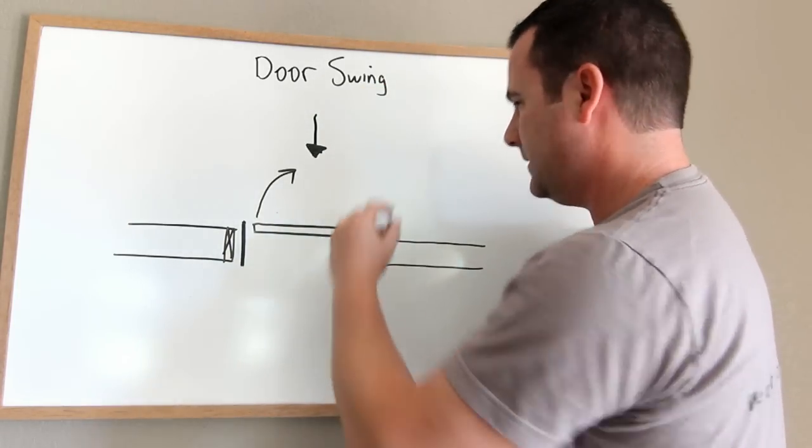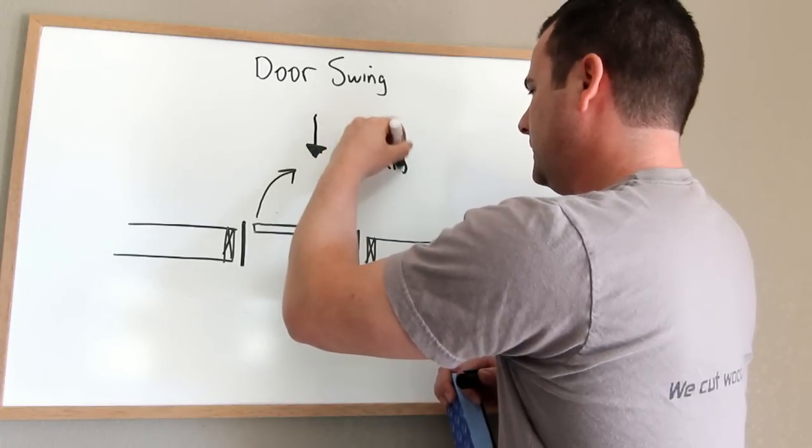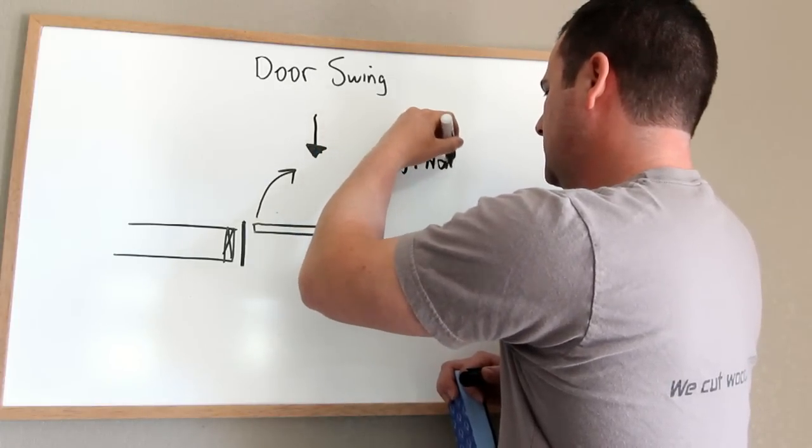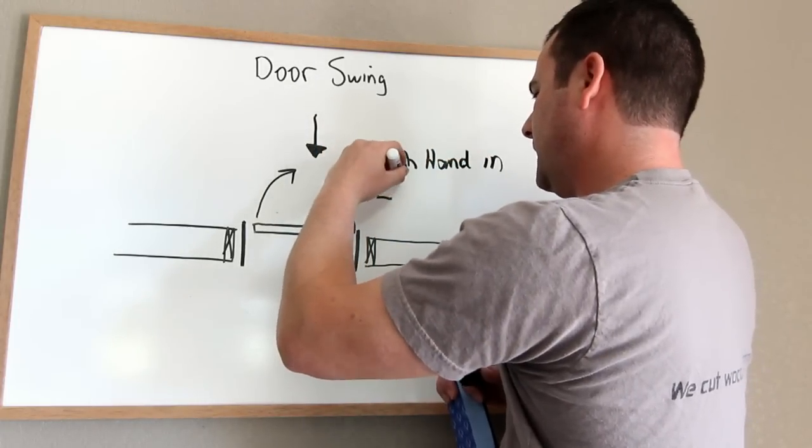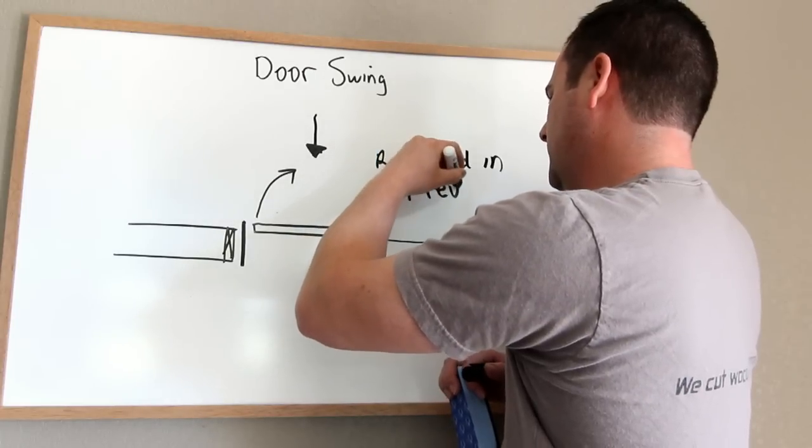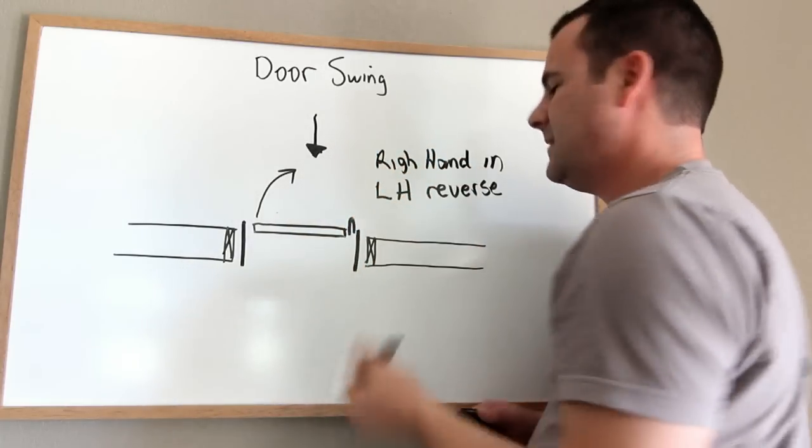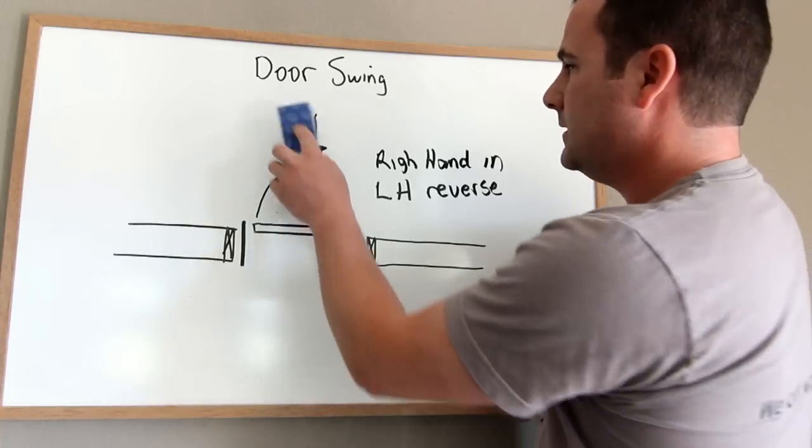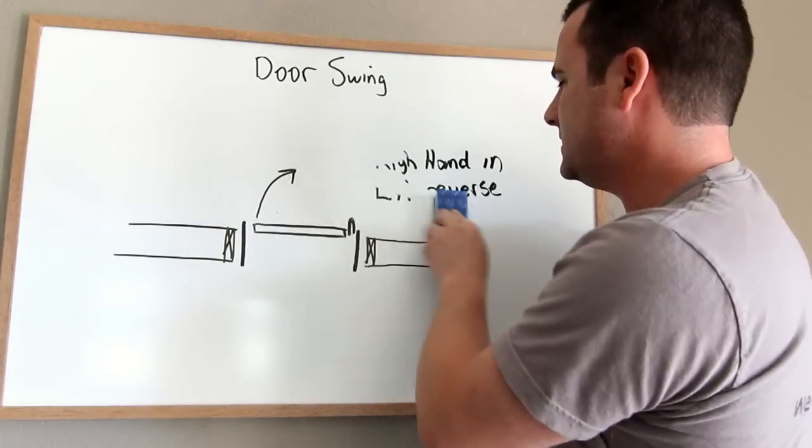So this scenario is a right hand in swing or a left hand reverse. But they're the same door. Let's go through scenario two.